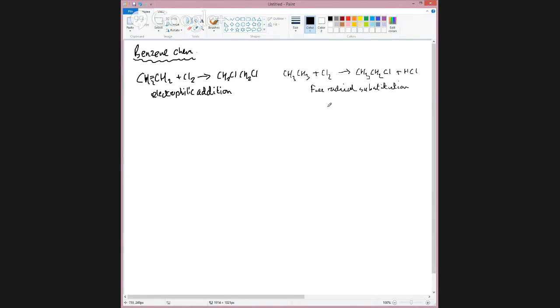Benzene, on the other hand, does it slightly differently. If you react benzene with chlorine, what happens is that you get chlorobenzene. So you only get one chlorine going on, a bit like this and you make HCl and this is a substitution reaction again.